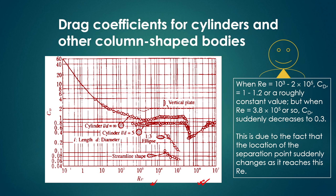From the C_D versus Re graph for cylinders and column-shaped bodies, when Re is in the range 10³ to 2×10⁵, the C_D value is roughly constant at 1 to 1.2. When Re reaches the critical value of about 3.8×10⁵, C_D suddenly drops to about 0.3, due to the sudden change in the location of the separation point.